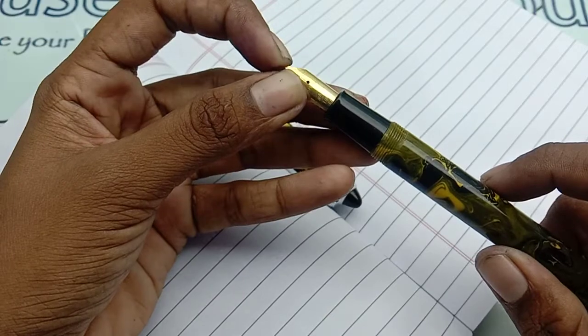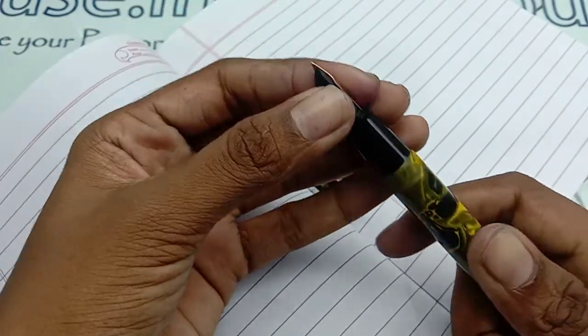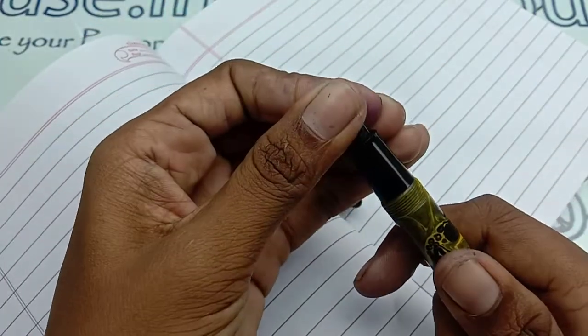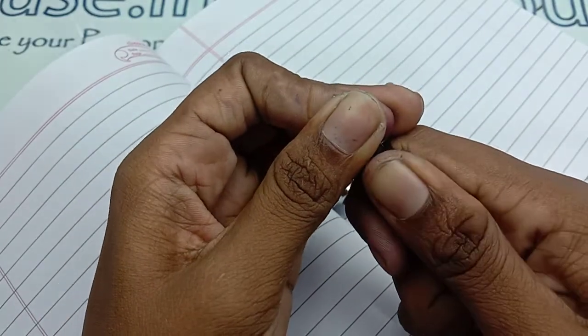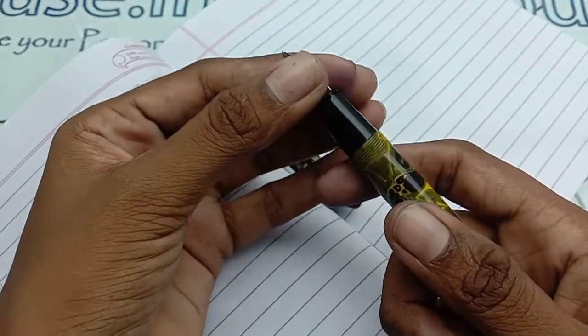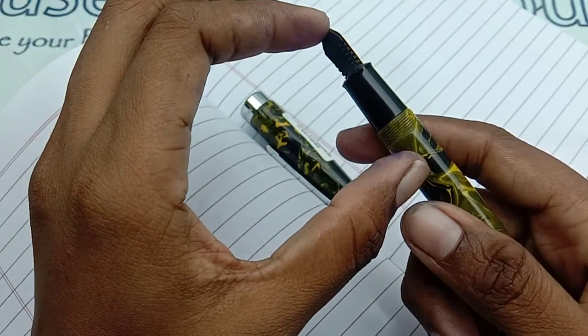If you want to swap the nib, you can hold it tightly and just twist it and pull it out. This is an easy way to remove it. The feeder size is so long, so be careful while removing this.